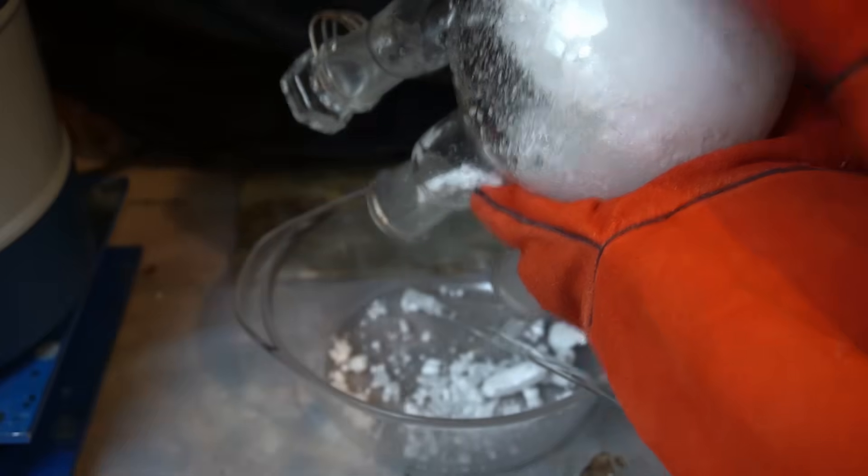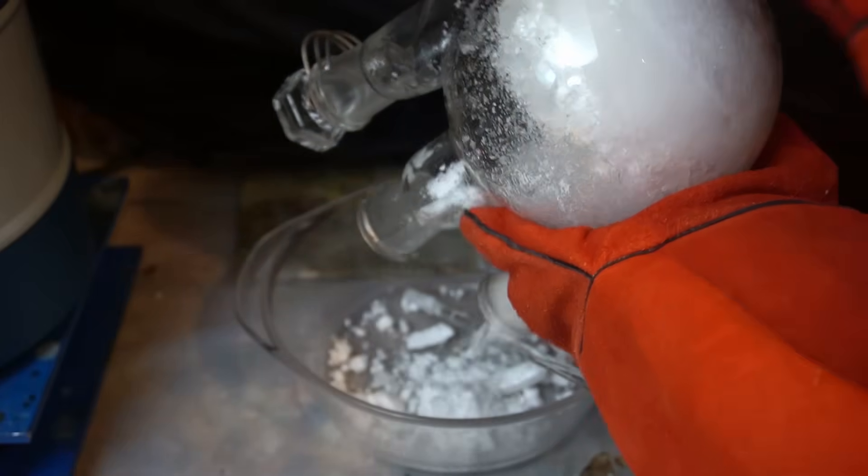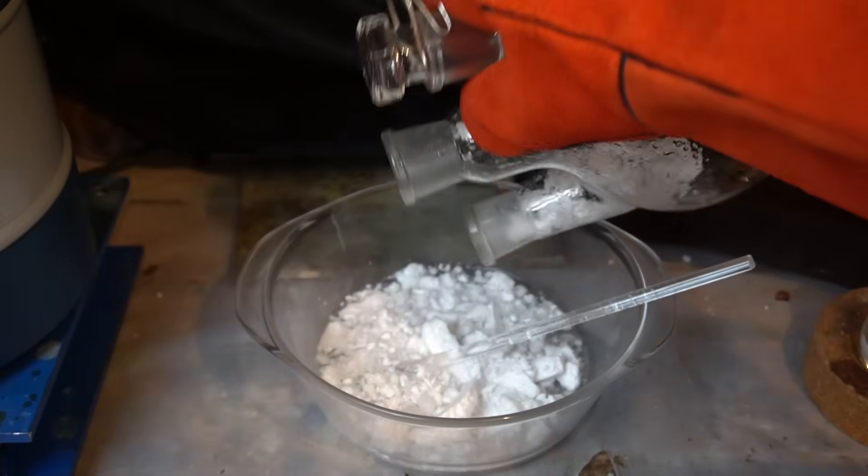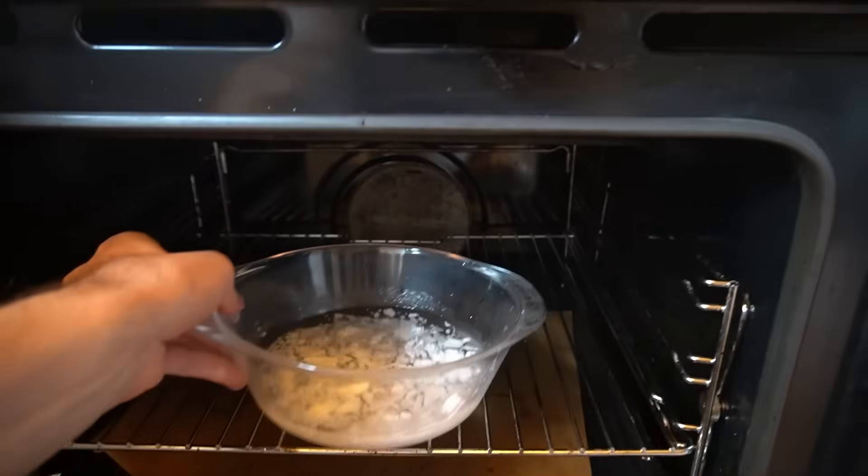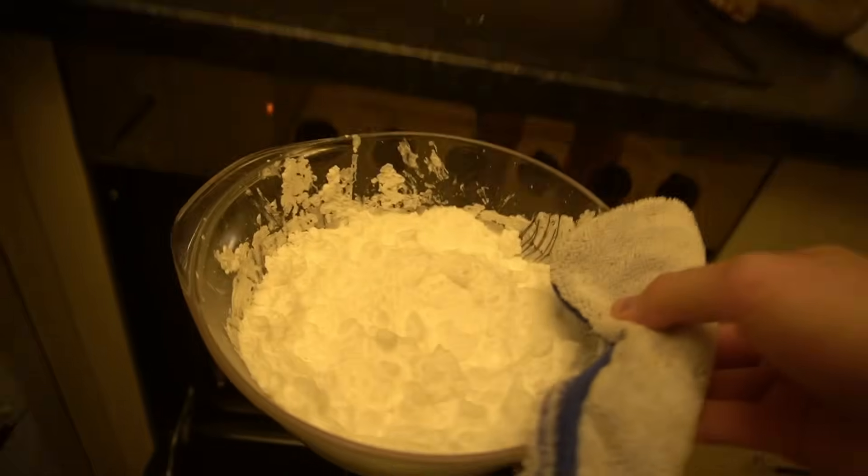So I changed my approach to a much simpler one and scraped all of the sodium acetate into a glass dish and put it in the oven at 150 degrees. I should have just done this from the start, since it works much better, and after about 2 hours, all of the water is gone.